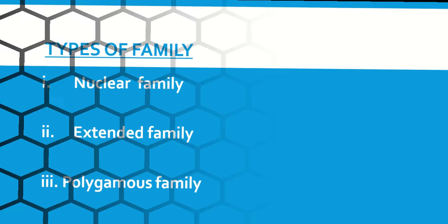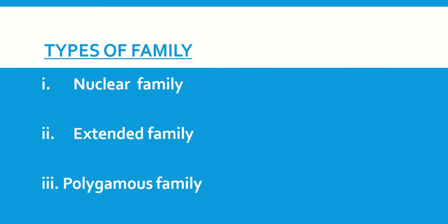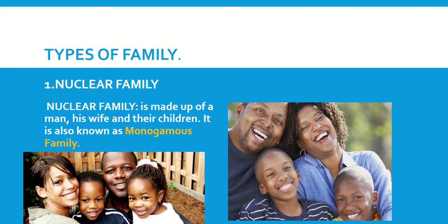Now, types of family: nuclear family, extended family, and polygamous family. Nuclear family is made up of a man, his wife, and their children. It is also known as monogamous family.